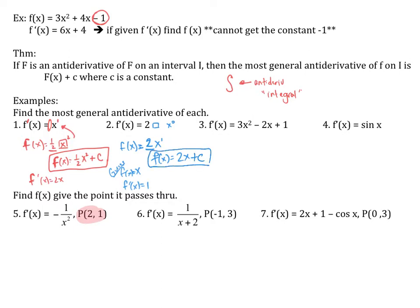For the polynomial example, using guess and check: x squared means I need x cubed; x to the first means I need x squared; x to the zero means I need x to the first. Taking the derivative of x cubed gives 3x squared — matches, so coefficient is 1. For x squared, derivative gives 2x — coefficient is 1. Same for x. So f of x equals x cubed minus x squared plus x plus C.